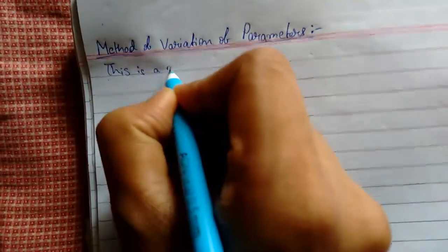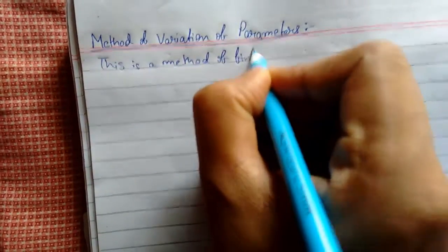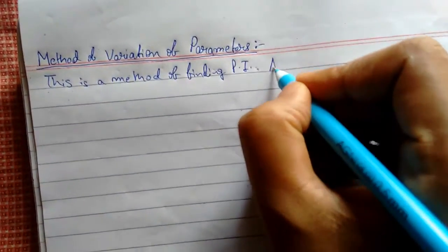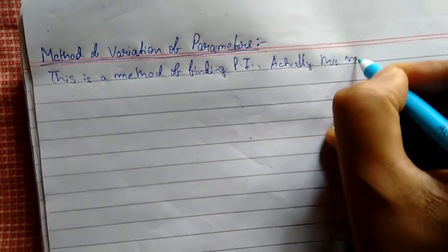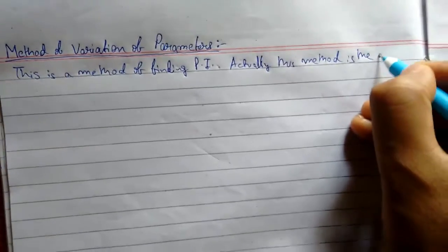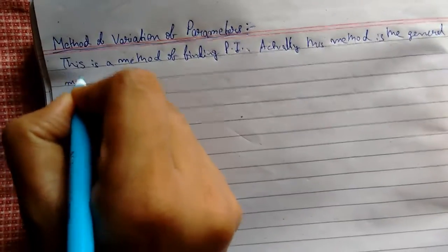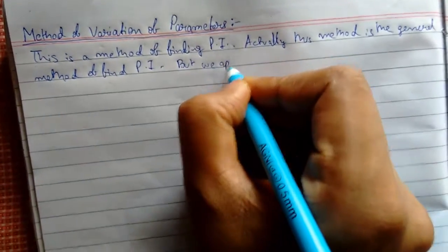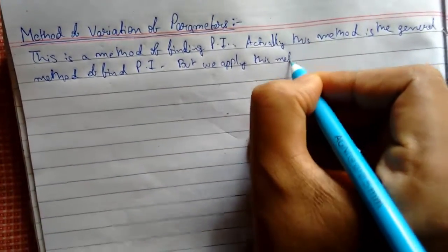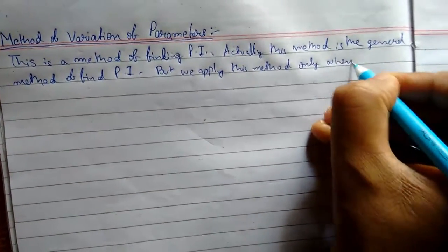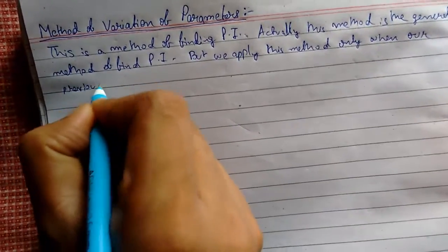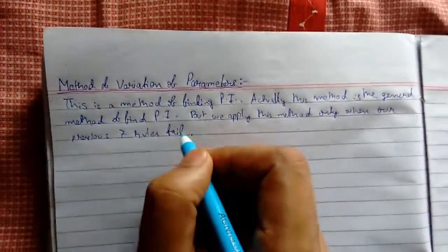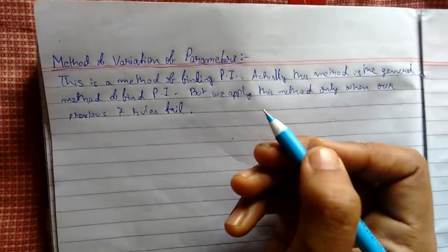This is a method of finding the particular integral (PI). Previously we did some rules to find the PI. This method is a general method of finding PI, but we apply this method only when our previous 7 rules fail. This is the general method — use it only when all the previous methods fail.